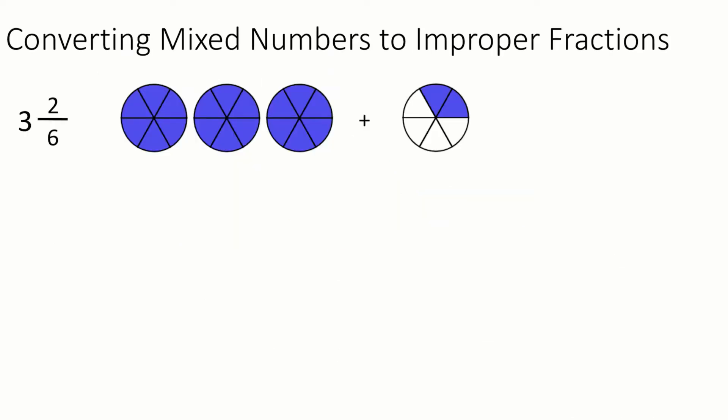Now, because mixed numbers go hand-in-hand with improper fractions, it's important to have a way to go in-between the two. So let's start with this mixed number of 3 and 2 over 6. So we have 3 wholes and 2 pieces of 6.